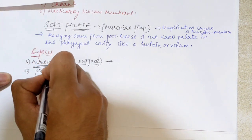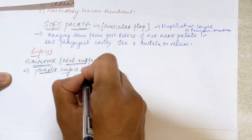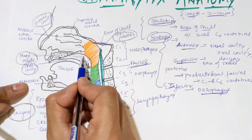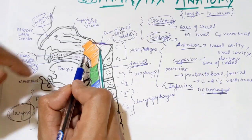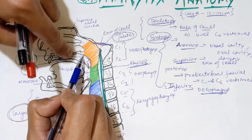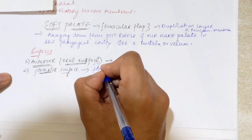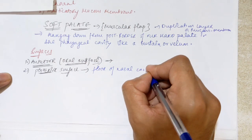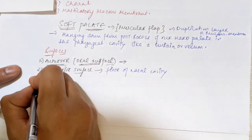The second surface is the posterior surface, which is in continuation with the floor of the nasal cavity. You can see the nasal cavity above, and this posterior surface area forms the roof for the nasal cavity — so the posterior surface is continuous with the floor of the nasal cavity.